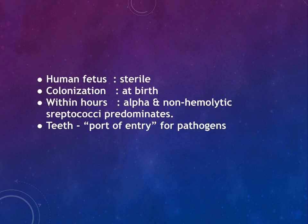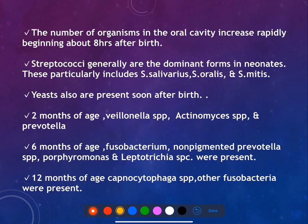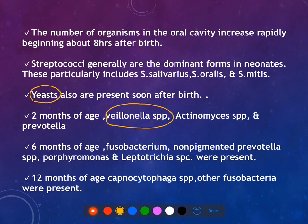Before going into the bacterial infections: usually the human fetus is sterile, but colonization occurs at birth, and within hours the oral cavity is accommodated with both alpha and non-hemolytic streptococci. Yeasts are also present at birth. At 2 months, the oral cavity is associated with Veillonella species. At 6 months, the predominant species are Fusobacterium and non-pigmented Prevotella species. At 12 months, the oral cavity is predominant with Capnocytophaga species.